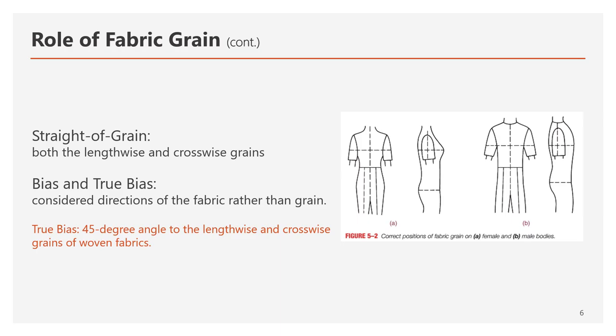Next, let's talk about straight of grain. Both the lengthwise and crosswise grains are called straight of grain because they follow the straight yarns of the fabric. Most fashion designers and marker makers place pattern pieces on the lengthwise or straight of grain — the direction of the fabric — unless there are other design instructions.